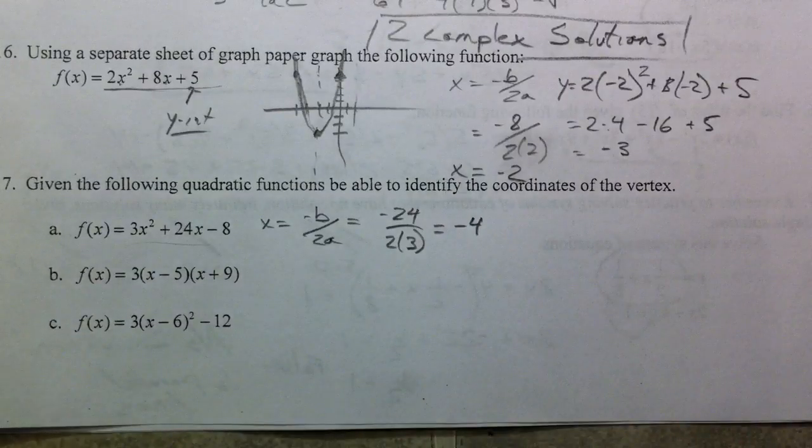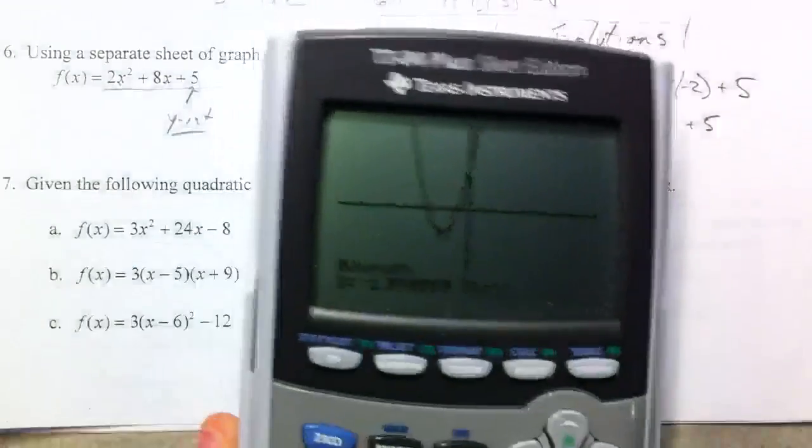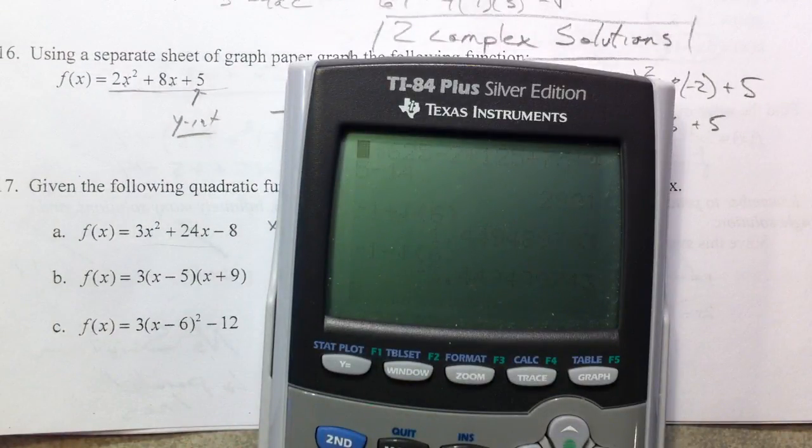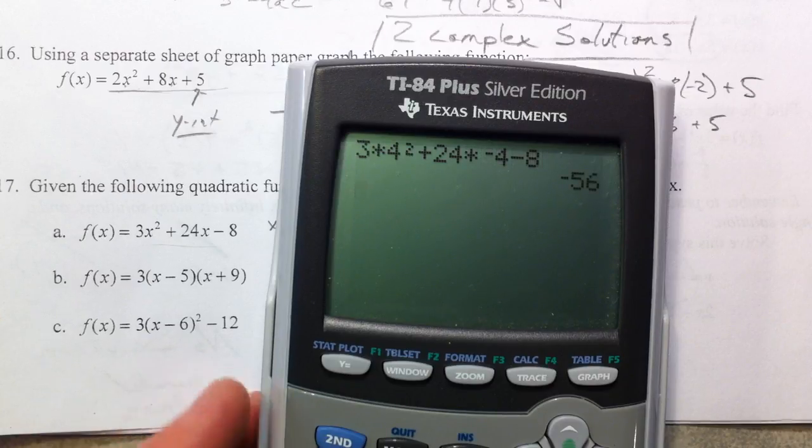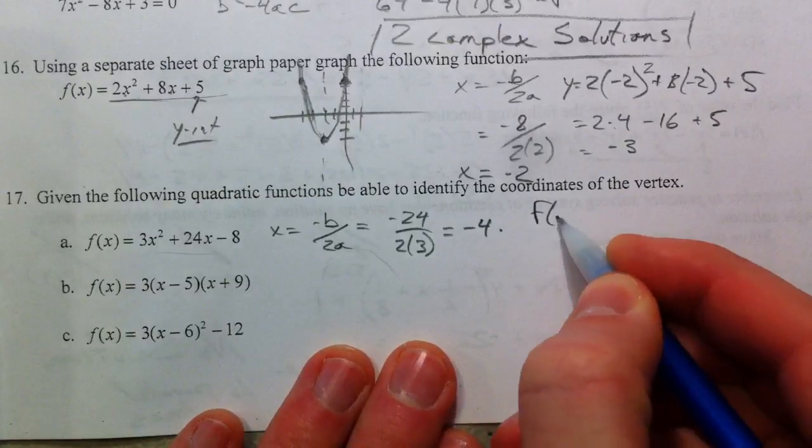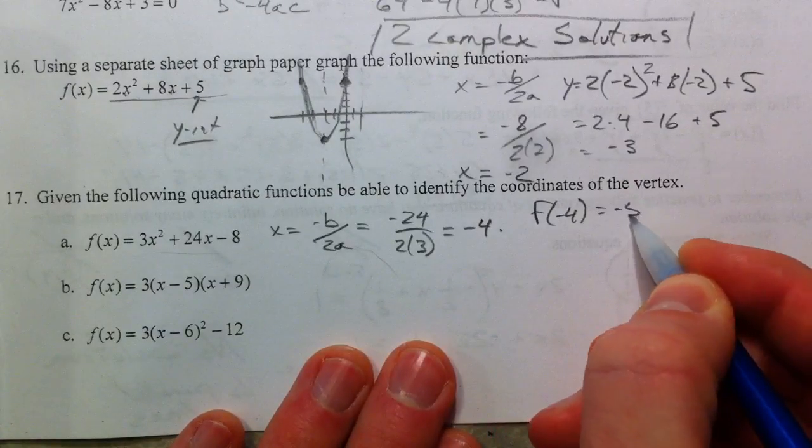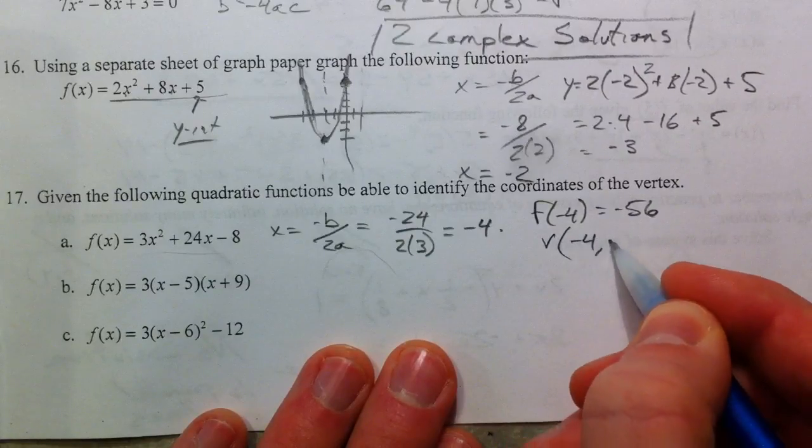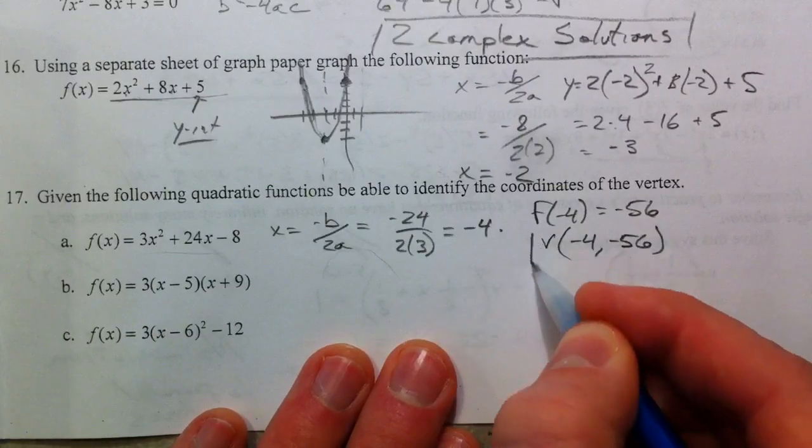And then when we plug that back in, negative 4 is what we're plugging in. Now, 3 times 4 squared, plus 24, times negative 4, minus an 8. So I'm going to say f of negative 4 is negative 56. And so the vertex is negative 4, negative 56.